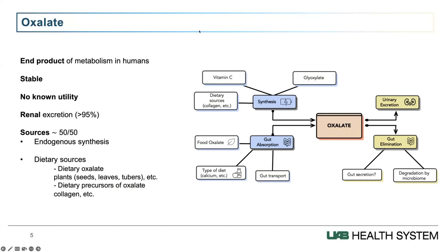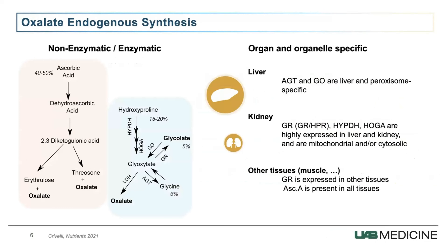What is less known is where oxalate is coming from and what it is doing. In humans, it is a net product, which is very different from bacteria or plants. It is stable, has no known utility, and is almost entirely excreted in the urine, more than 95 percent, and a little bit in the gut. Sources are about evenly split between metabolism — endogenous synthesis — and dietary sources that directly absorb oxalates present in food like plants, leaves, tubers, and precursors such as collagen.